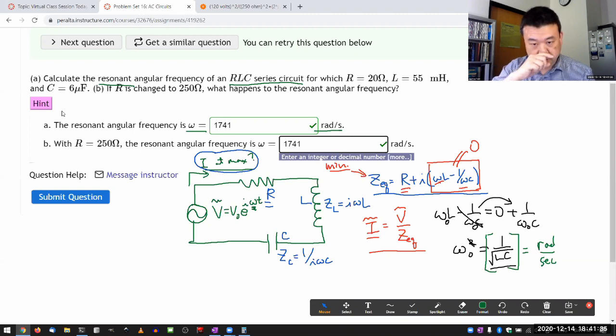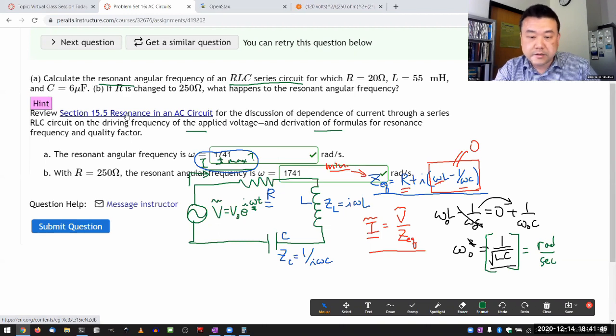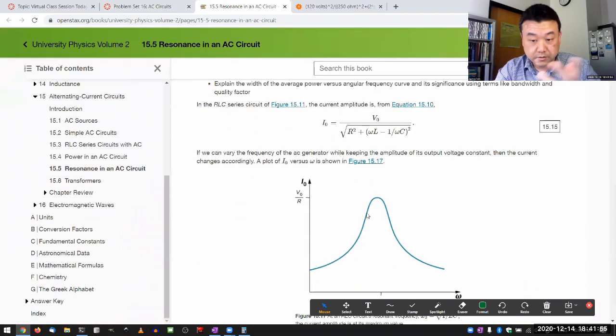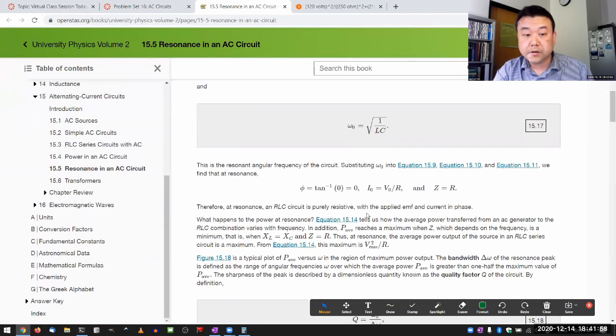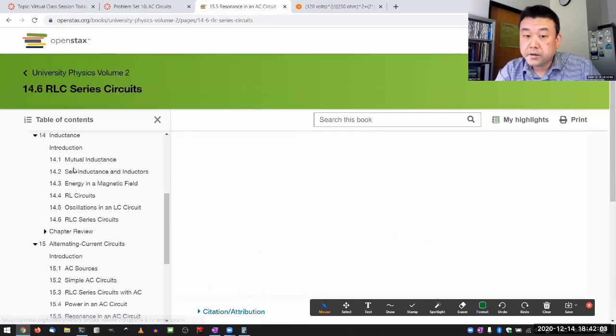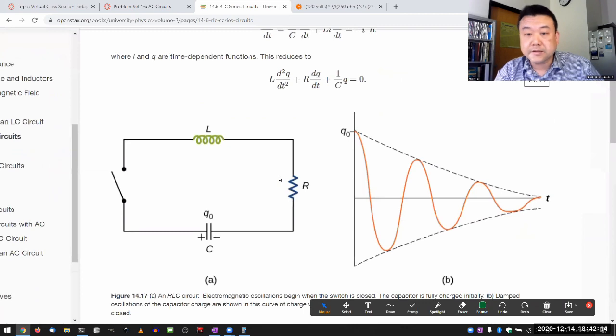And this is a contrast to draw from a potentially confusing situation I was talking about earlier. This is why it's important that I specify this is a driven AC circuit. Because there was a similar situation earlier with the RLC series circuit that was not a driven AC circuit. That's where you apply a quick change in voltage and then let the circuit oscillate on its own.